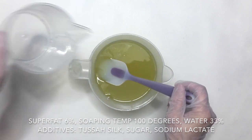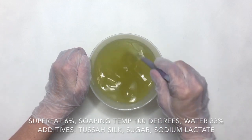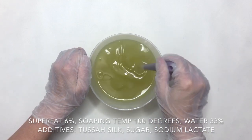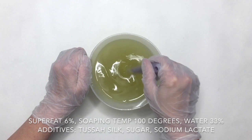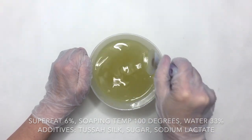I do this because my recipe tends to have a lot of hard oils and I find that it works better this way. My water is 33% and I'm using tussah silk, sugar, and sodium lactate, which is already added to my water.